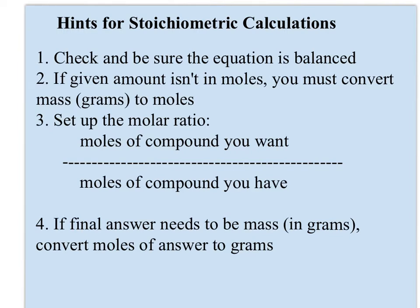So here's some hints to sum up. First you have to check and be sure your equation is balanced. Then you have to decide, are you starting in moles or are you starting in grams? If it's in moles, great, you can go right to step 3 and set up your molar ratio. But if it's in grams, you have to convert to moles first. And then you always use a molar ratio in stoichiometry. It's the only way to compare two different parts of a reaction. And then finally, if your final answer is asked to be in moles, you're done. But if you're asked to express it in grams, you need to convert it back from moles to grams.